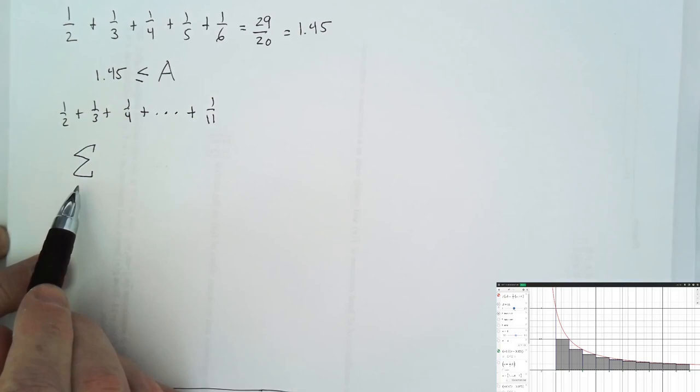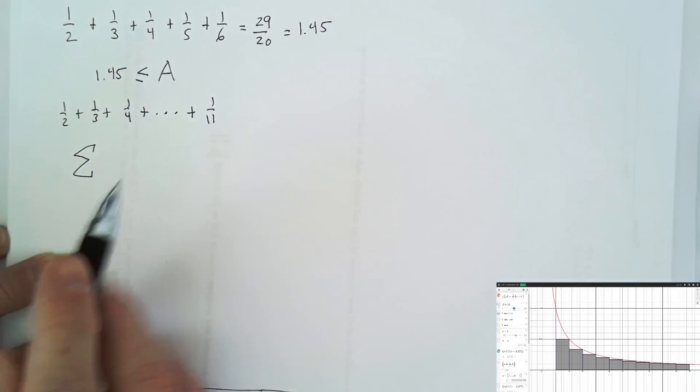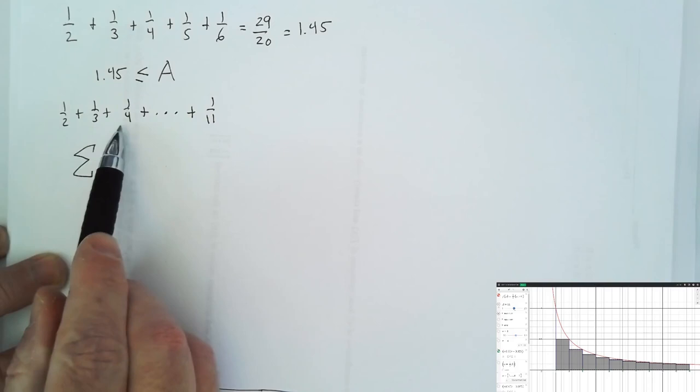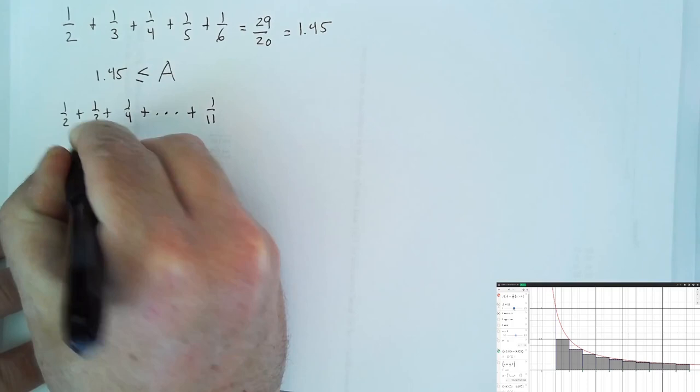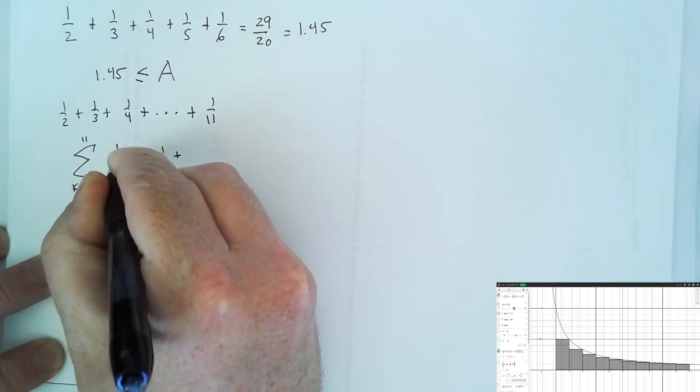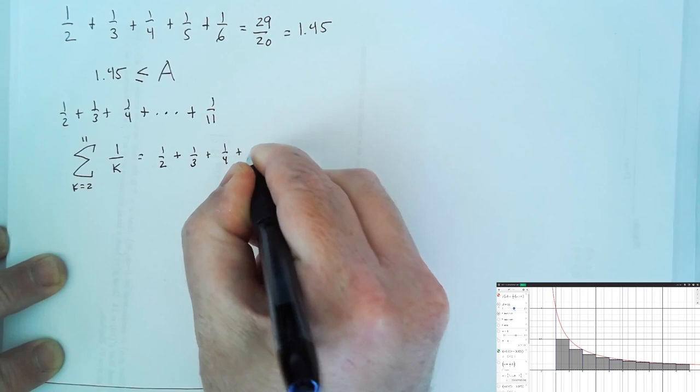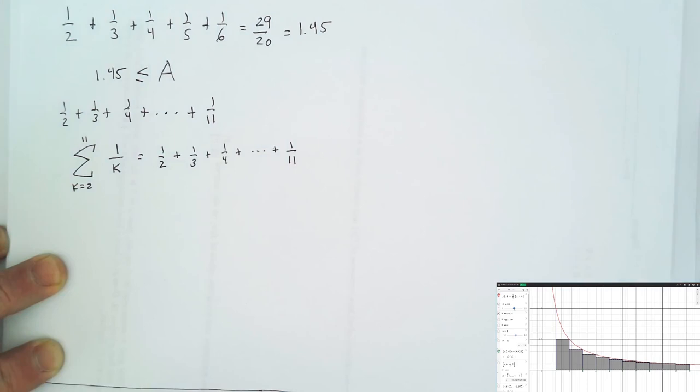You may have seen sigma notation. This is a Greek capital letter sigma, which stands for 'summa,' meaning sum in Greek. If we figure out a formula for the things we're adding up — here it's 1 over an integer — we can say we're adding up numbers of the form 1 over k, with k starting at 2 and going up to 11. That means 1 half plus 1 third plus 1 fourth, continuing until we reach 1 over 11.